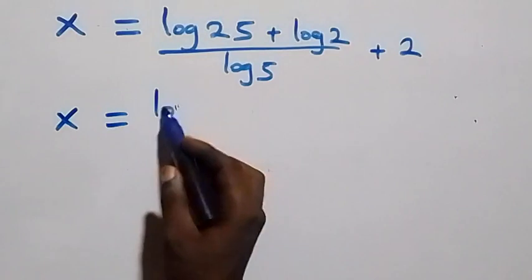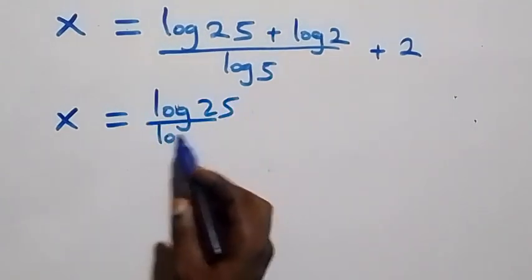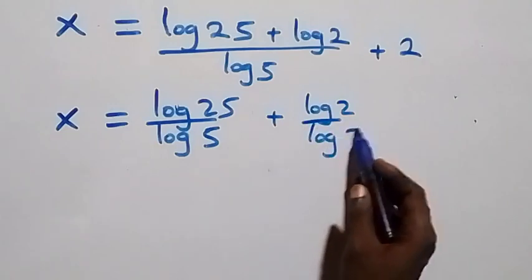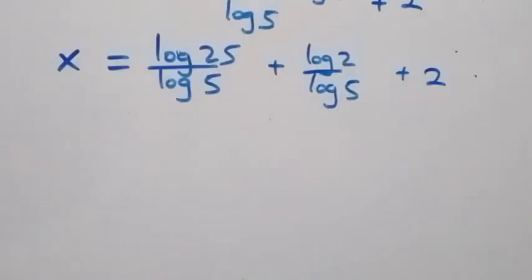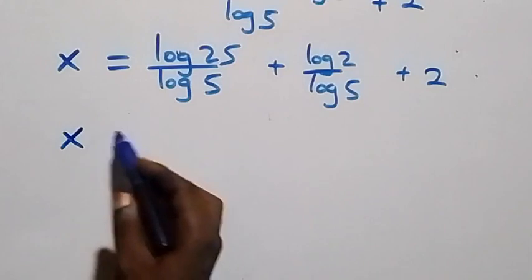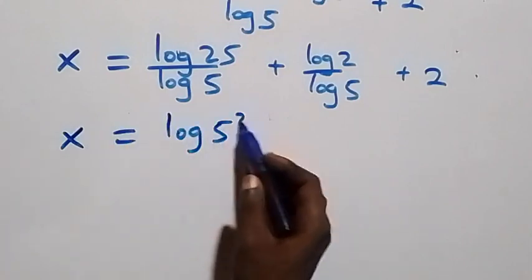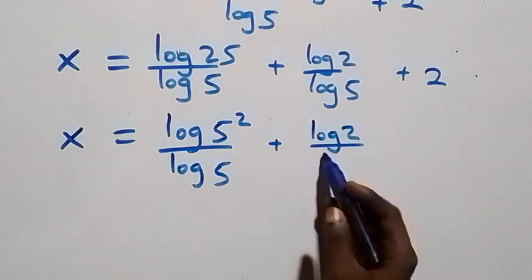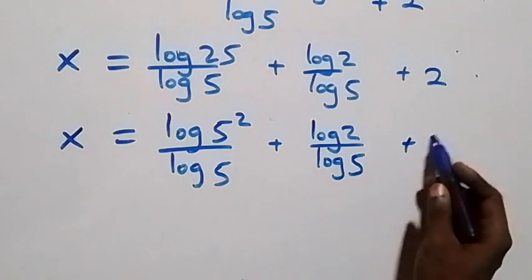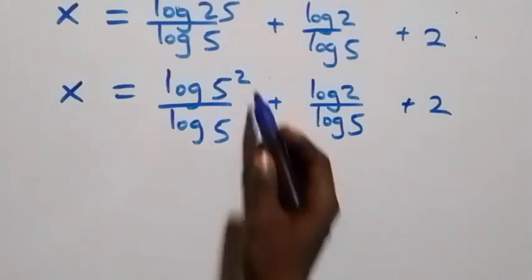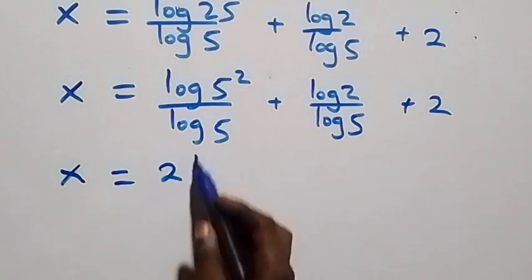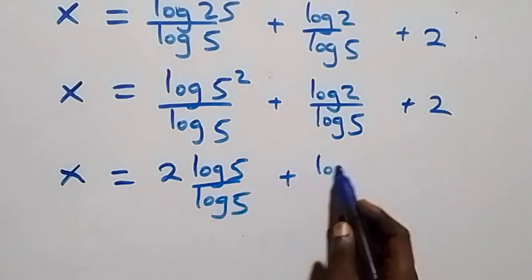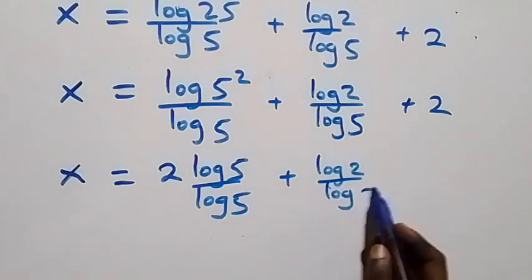We separate this into two fractions: x equals to log 25 over log 5, plus log 2 over log 5, plus 2. Also, 25 can be expressed as 5 squared, so x equals to log 5 squared over log 5, plus log 2 over log 5, plus 2. Applying the power log rule, 2 log 5 over log 5, plus log 2 over log 5, plus 2. Log 5 cancels each other, giving 2, so x equals to 2 plus log 2 over log 5, plus 2.